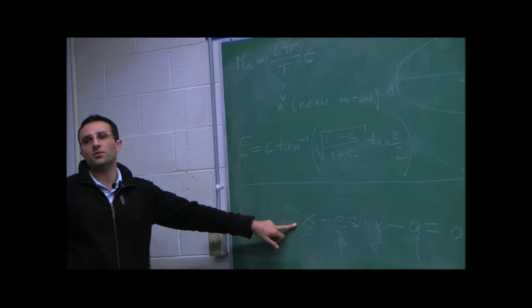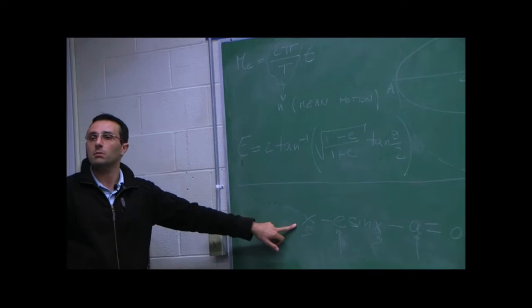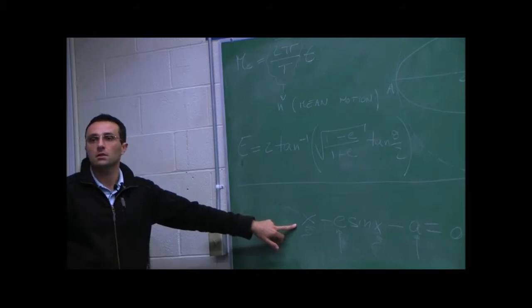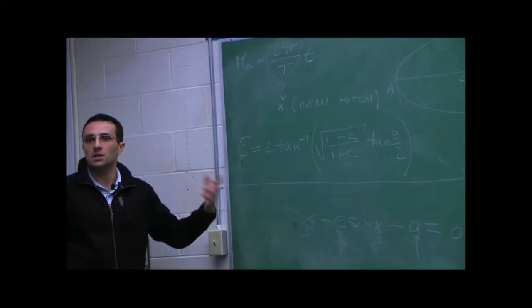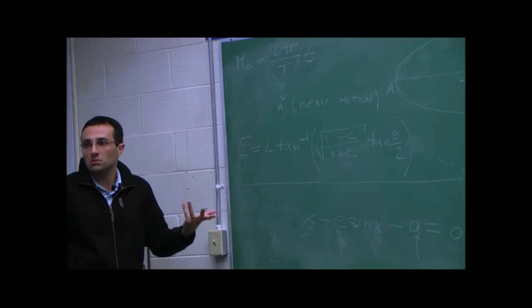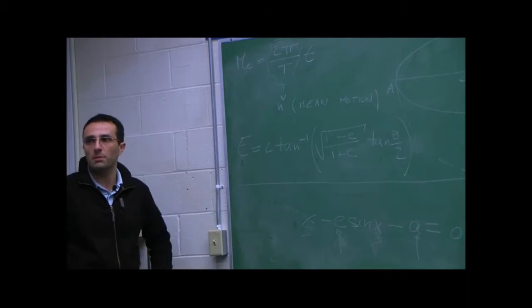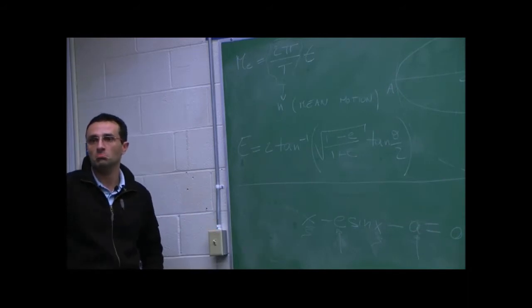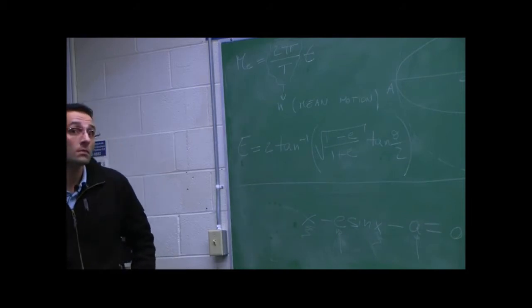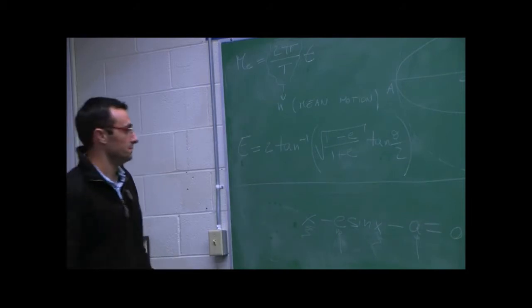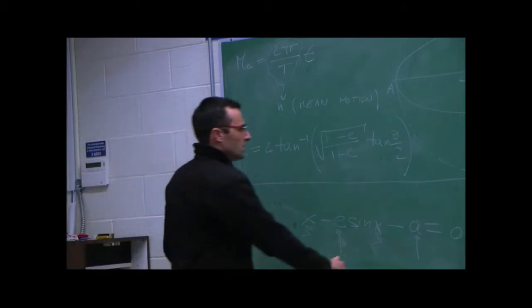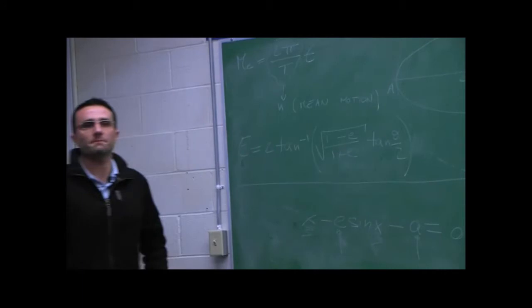How do you find zeros of functions numerically? You've seen this in other classes probably — there are many iterative procedures. I think I'm using the Newton method in MATLAB, but they're all equivalent.